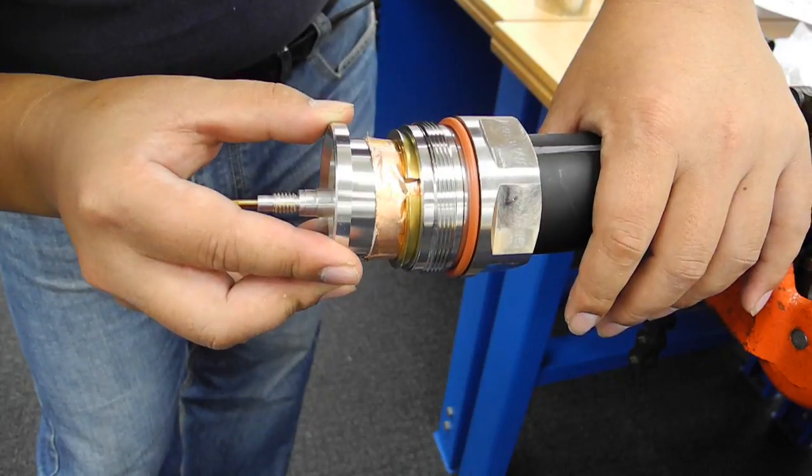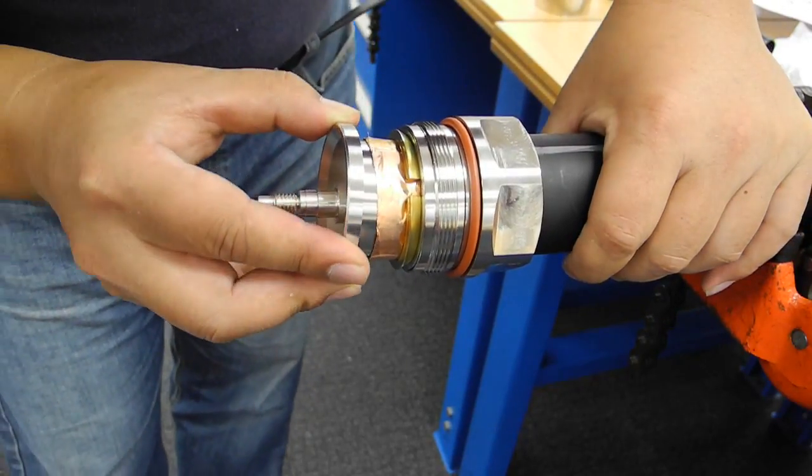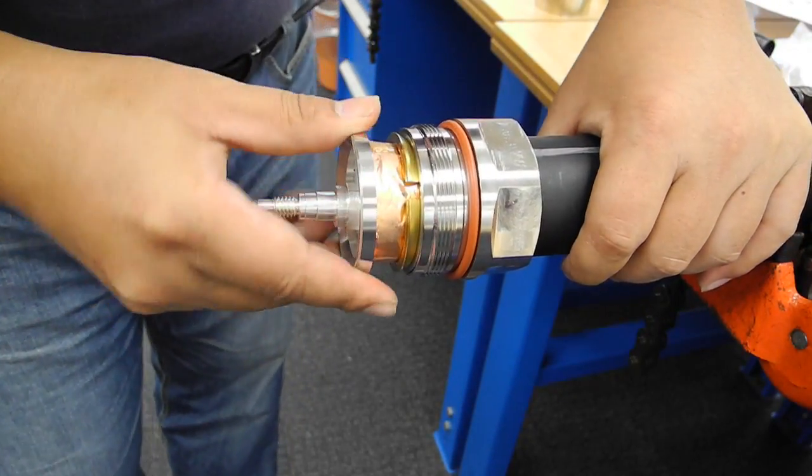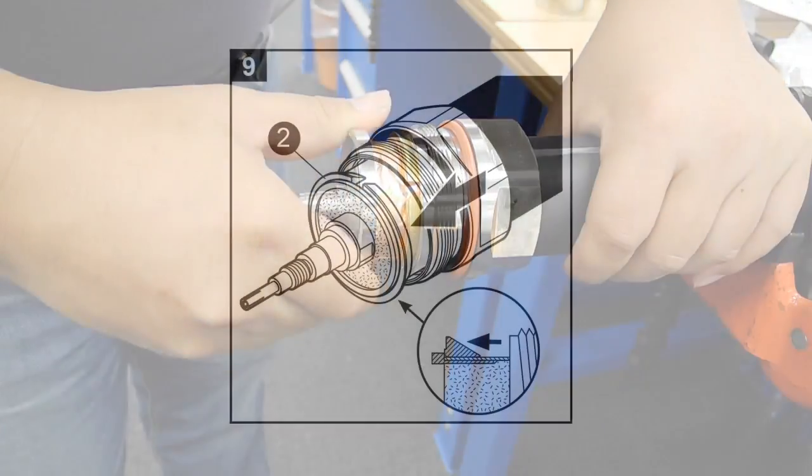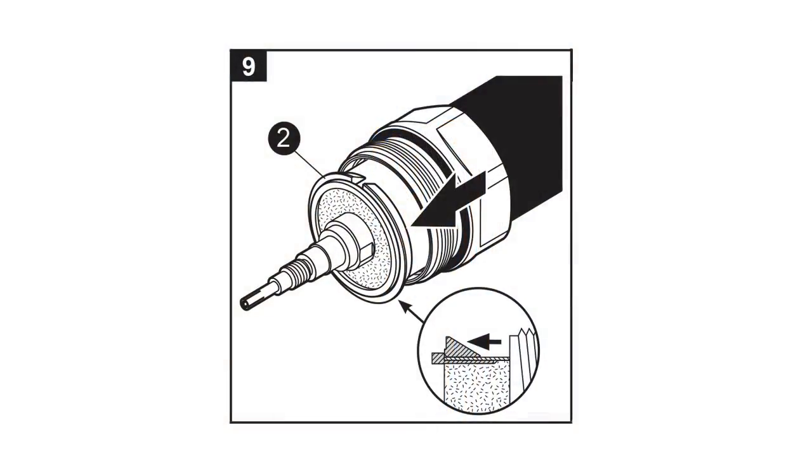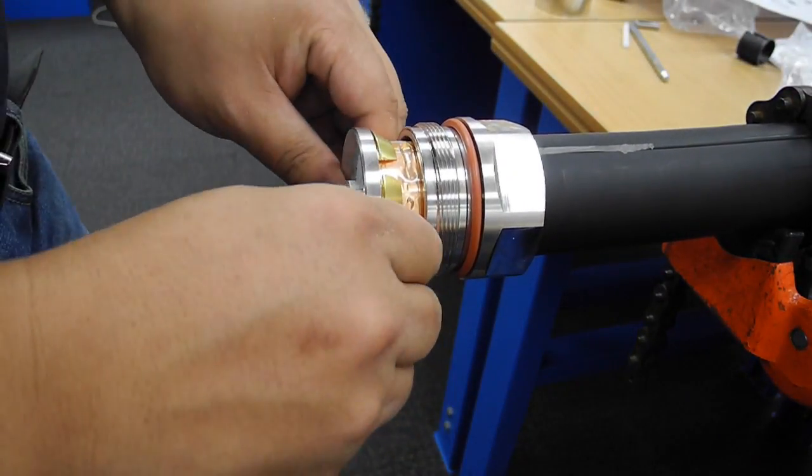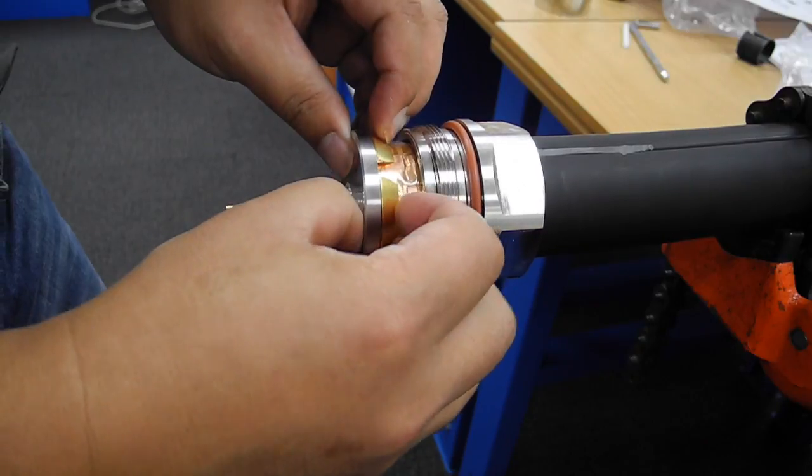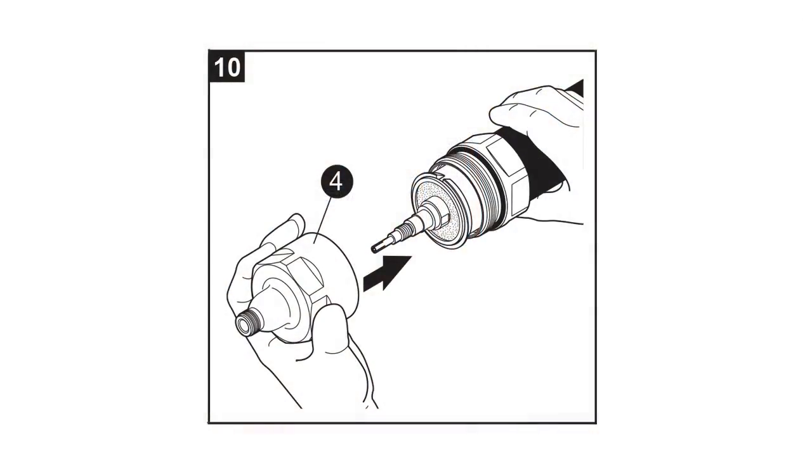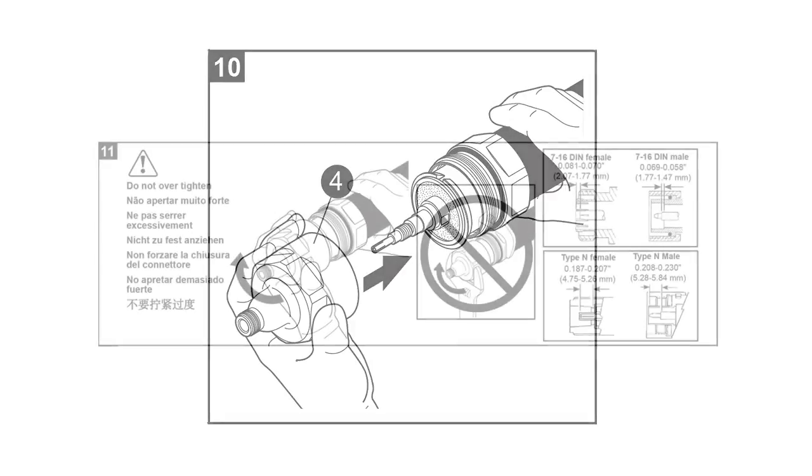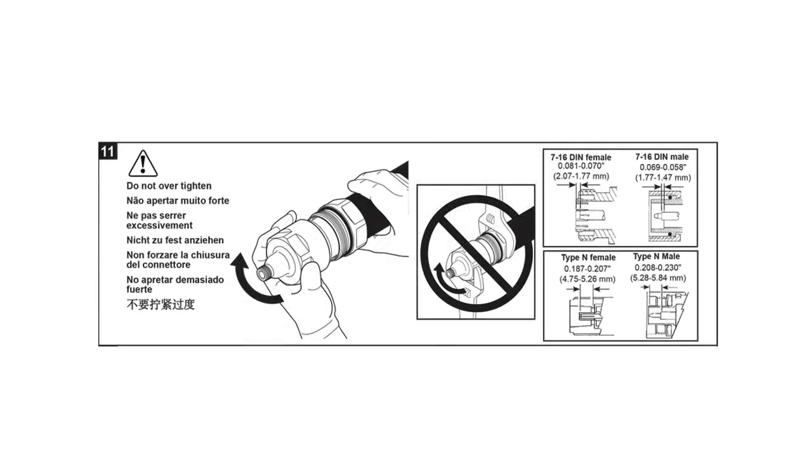Insert the sleeve as far as it will go. Work the clamp ring toward the sleeve until it hits the back of the sleeve.